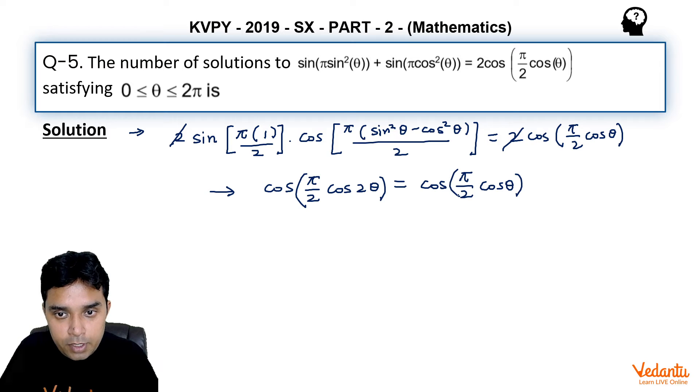Now please listen carefully that this angle π/2 cos 2θ will be within -π/2 to π/2, from fourth quadrant to first quadrant.